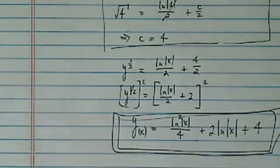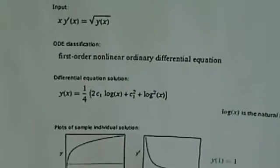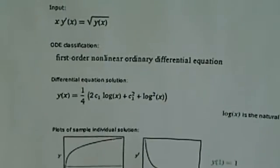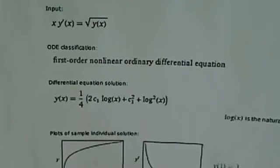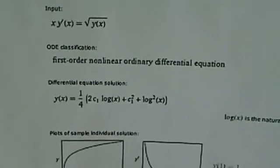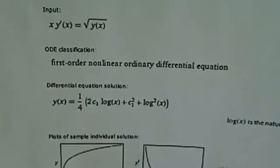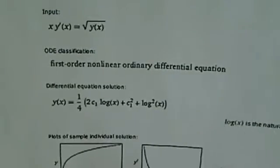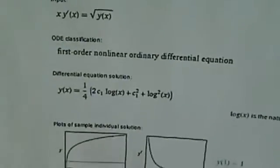If you go on to Wolfram Alpha and check the work, you can see it's exactly the same form — natural log, natural log squared, and plus a constant squared. And if you plug in the initial condition you will get the same thing, and this one is from our friendly Wolfram Alpha.